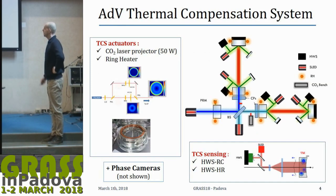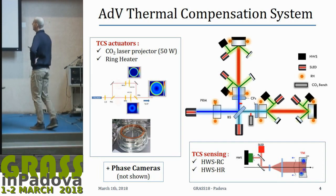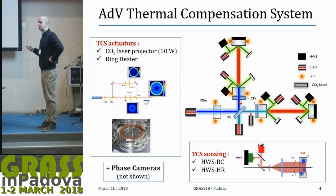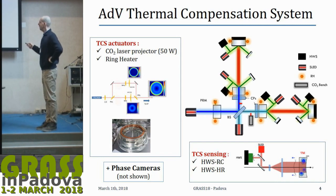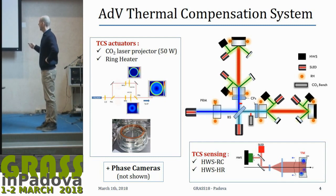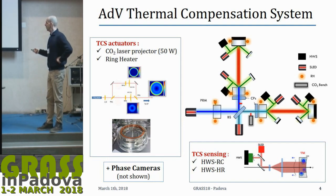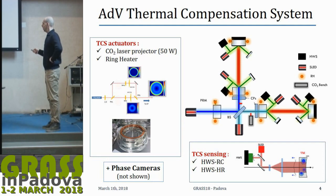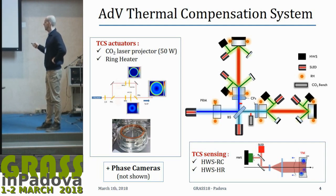This is the idea of the thermal compensation system. We have actuators divided into CO2 laser projectors that project a heating pattern on compensation plates in front of the input optics to recover the wavefront cleanliness we want, and ring heaters — angular heaters based on the Joule effect — to act on the thermoelastic deformation and radius of curvature of core optics, deployed on all core optics. We also have Hartmann wavefront sensors in two types: one looking in the recycling cavity on-axis, and another looking at the high-reflective part of the mirrors in off-axis reflection.